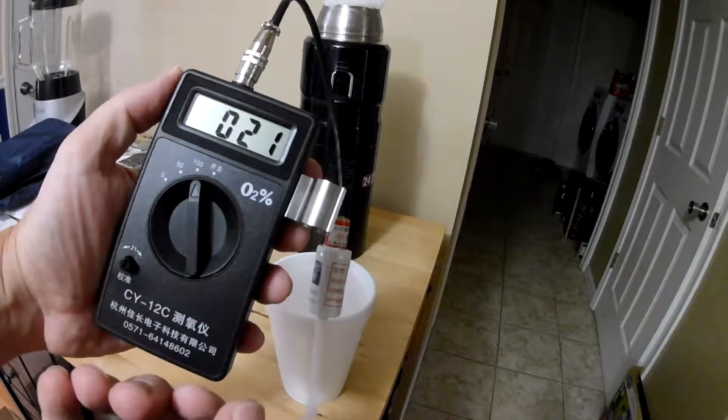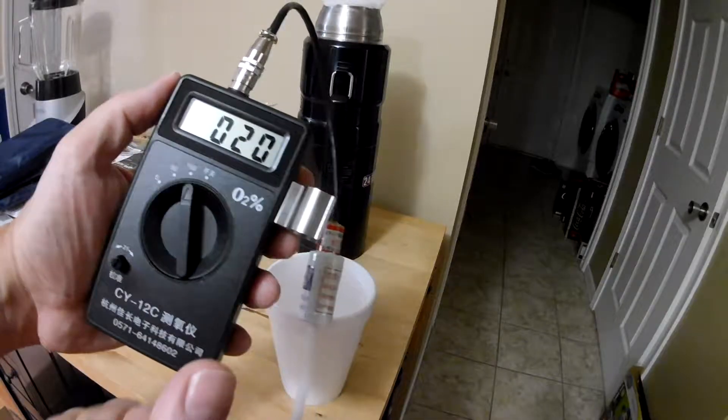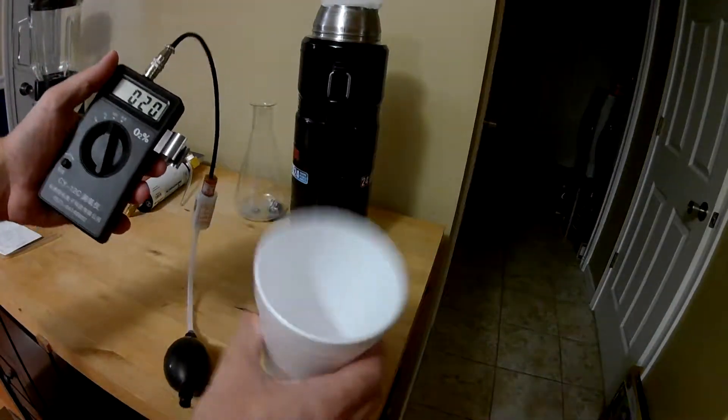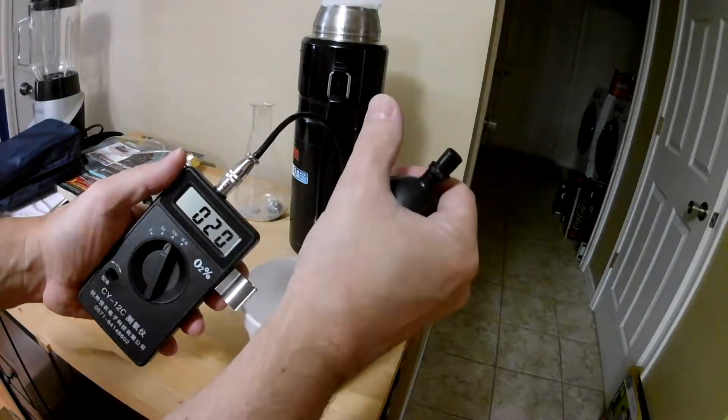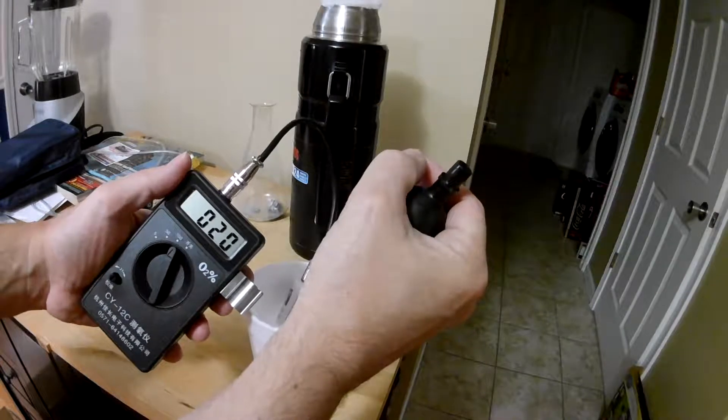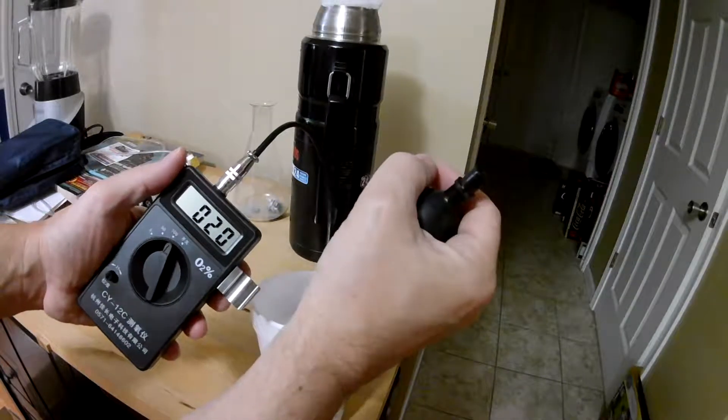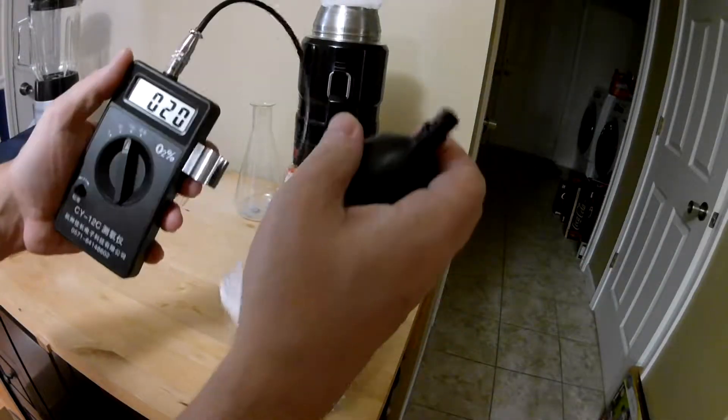I'll show you the air in my house is about 21%, which is exactly what it should be. I've got an empty cup here. I'll stick that down into the cup, so it's actually at about 20-21%.